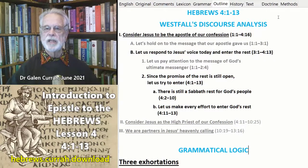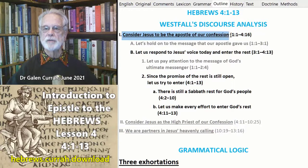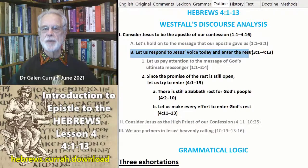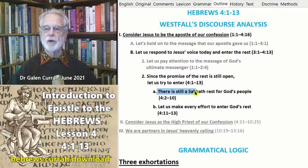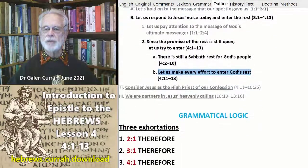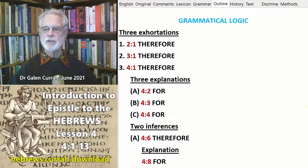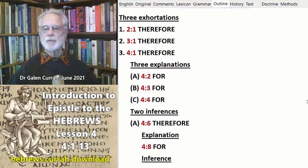Our current passage fits into Dr. Westfall's discourse analysis under the general topic 'Consider Jesus to be the Apostle of our Confession.' Under point B: 'Let us respond to Jesus' voice today and enter the rest.' Under point 2: 'Since the promise of the rest is still open, let us try to enter.' We deal with points A and B: there is still a Sabbath rest for God's people, and so let us make every effort to enter God's rest. Modern readers may find the logic of this passage a bit odd, so as you read through it, try to follow the grammatical flow of logical connectors.